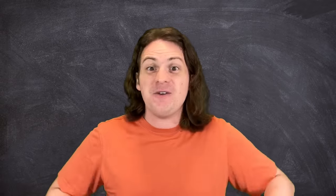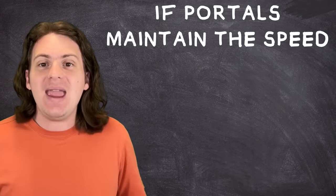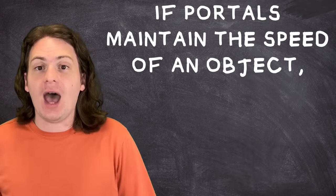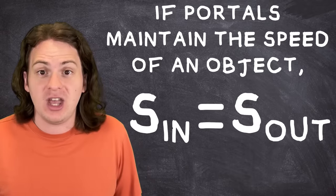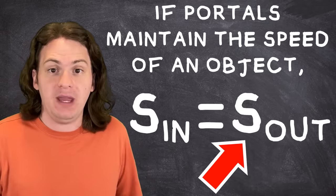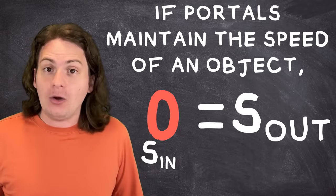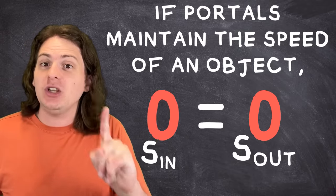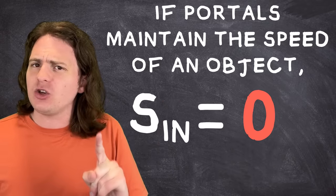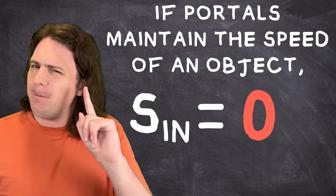Would it simply plop out the other side, maintaining its initial speed of zero? Or would it go shooting off at the speed of the moving portal? Unfortunately, in the game you're not allowed to place a portal on a moving surface, probably so they didn't have to deal with problems just like this. But luckily, we don't need those pesky game designers to answer this question. Not when we have physics. Now at first, you might be inclined to say that option A is correct. If the portal maintains the speed of the object passing through them, then we could set up a very simple equation like this. Speed in equals speed out. If the speed of the block going in is zero, then the speed of the block going out is also zero. This would be absolutely correct if the speed of the initial block were actually zero. But it's not.